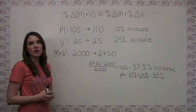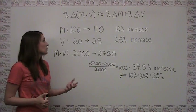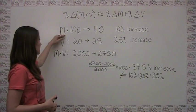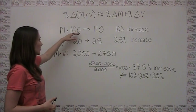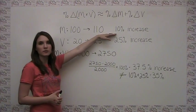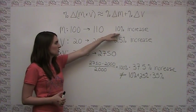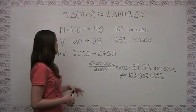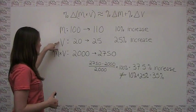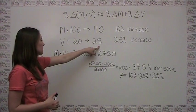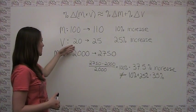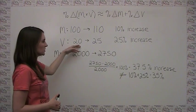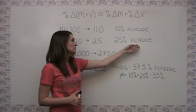The viewer is not wrong, as we can see in this example. Let's say hypothetically that we're increasing M from 100 to 110 — that would clearly be a 10 percent increase. Furthermore, let's say we're increasing V from 20 to 25, which is an increase of 5 on a base of 20, so that's a 25 percent increase.